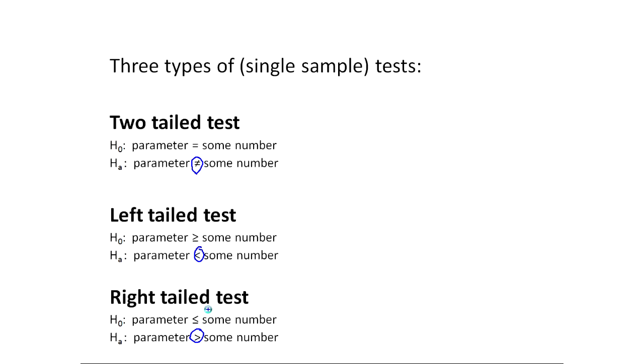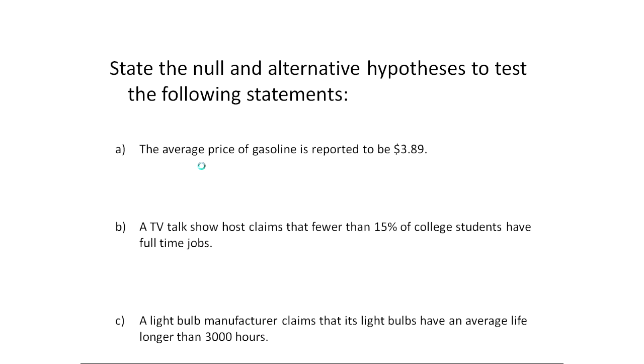When I go through and actually set up a test for something, what I do is I consider what am I testing, what's its complement, and which one has the equality, and that really determines which one's H naught and HA in the setup. Here I have three claims that we would say, how would I actually test this out? You have to pay attention to what population parameter would you be interested in, along with what tailed test would it be.